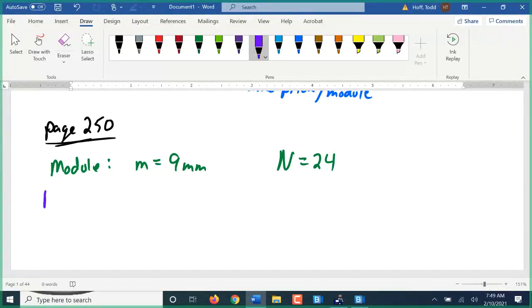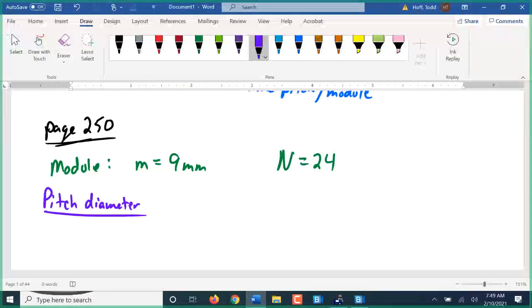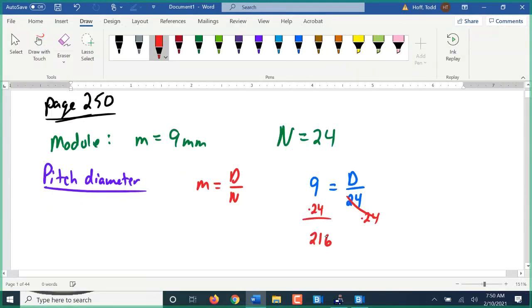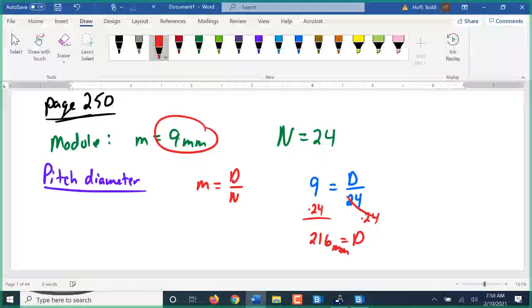First, let's find the pitch diameter. Module M is the diameter divided by the number of teeth. The diameter there is the pitch diameter. So I can find that pitch diameter simply by plugging in 9 for my module and 24 for my number of teeth. To solve for D, I'm just going to multiply by 24. That's 216 millimeters, because my module was in millimeters.